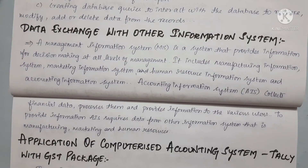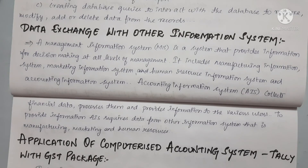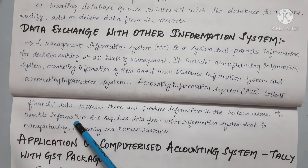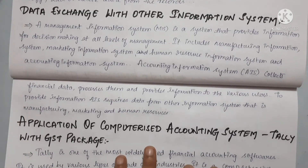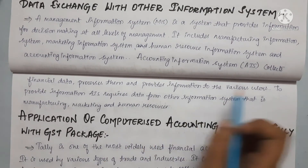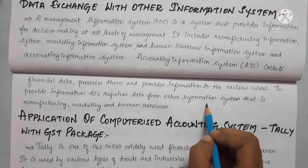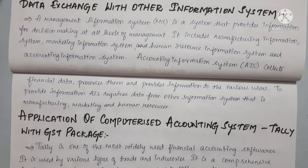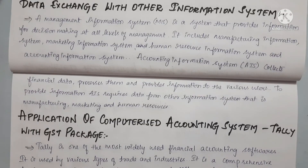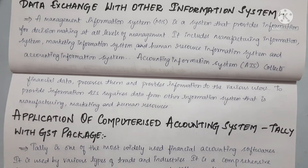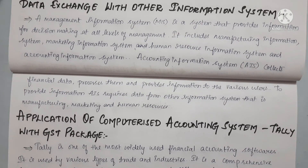Our accounting information system collects financial data, processes it, and provides information to various users — both internal and external. To provide information, the AIS requires data from other information systems — that is, manufacturing, marketing, and human resources. We have to get the basic information into our accounting system.